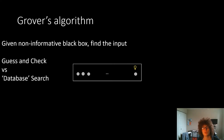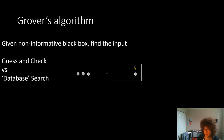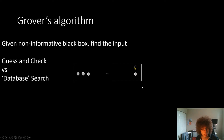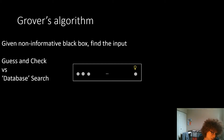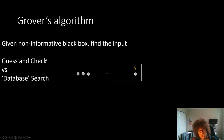Grover's algorithm addresses this problem: given a non-informative black box — basically a box with a bunch of switches and a light bulb at the end — figure out which combination of switches turns on the light. You get no information: if the bulb doesn't light up, you don't know if you were close or not. The only classical approach is to guess and check every single combination, which could require 2^n attempts.